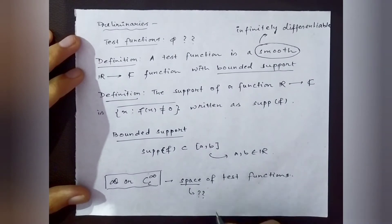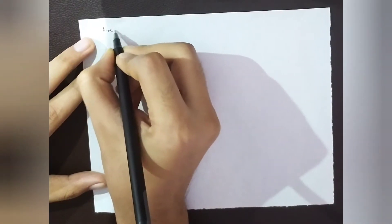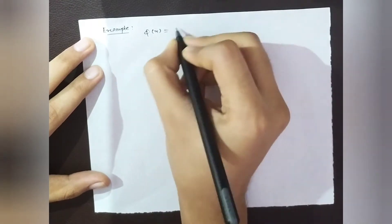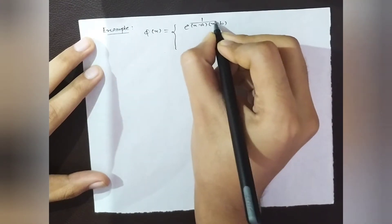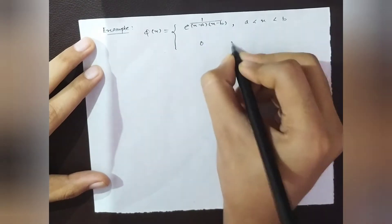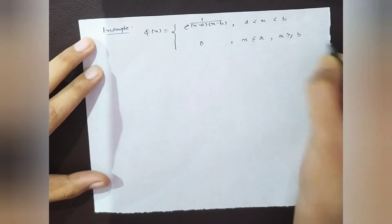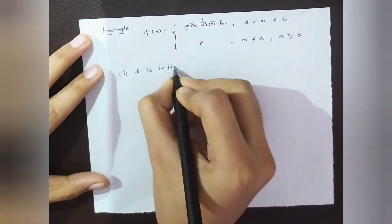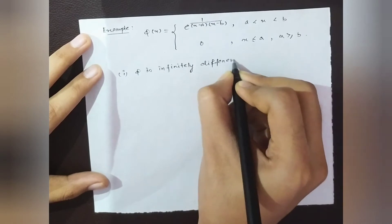An example of a test function φ with bounded support is given here, where the function is zero outside the interval [a,b]. Verify yourself that φ is infinitely differentiable and the support of φ is a subset of the compact set [a,b].